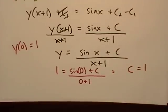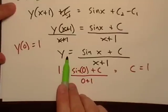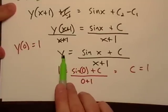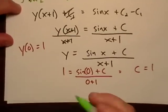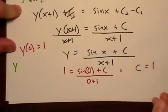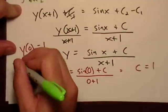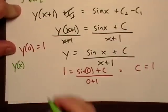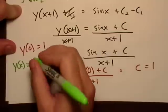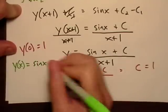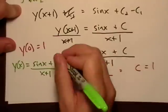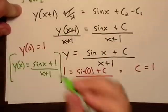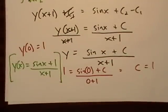So if we want to go back. Remember, this is the general solution, I always just leave a plain old y. But once I've figured out what my c is and I have the actual particular solution, then I write it as y of x. So then I get sine of x plus one over x plus one.